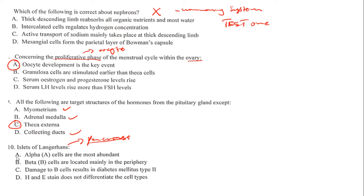The islets of Langerhans are found in the pancreas and play a role in the production of secretions. For the islets of Langerhans: alpha cells are the most abundant, beta cells are located mainly in the periphery, destruction of beta cells results in diabetes mellitus type 2, and H&E stain cannot differentiate them. The answer is A — alpha cells are the most abundant.